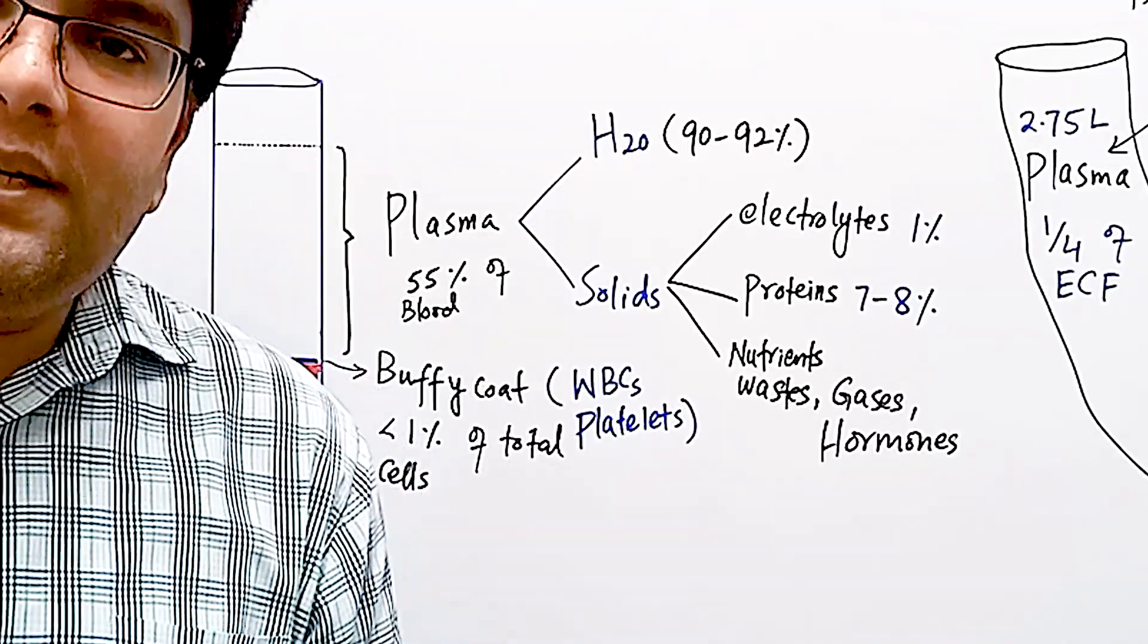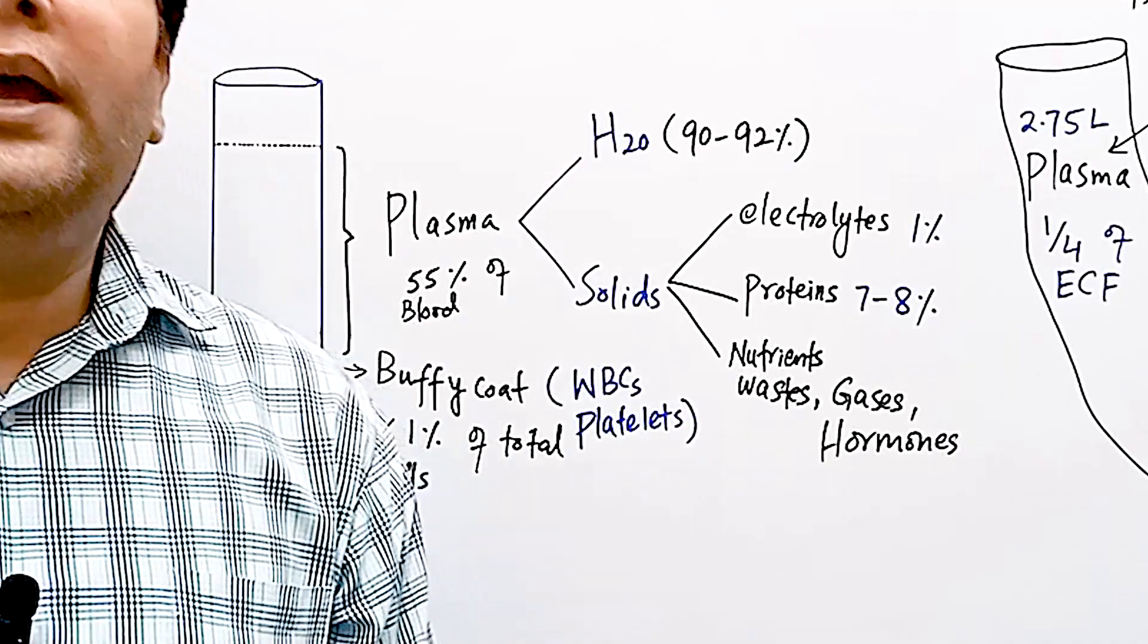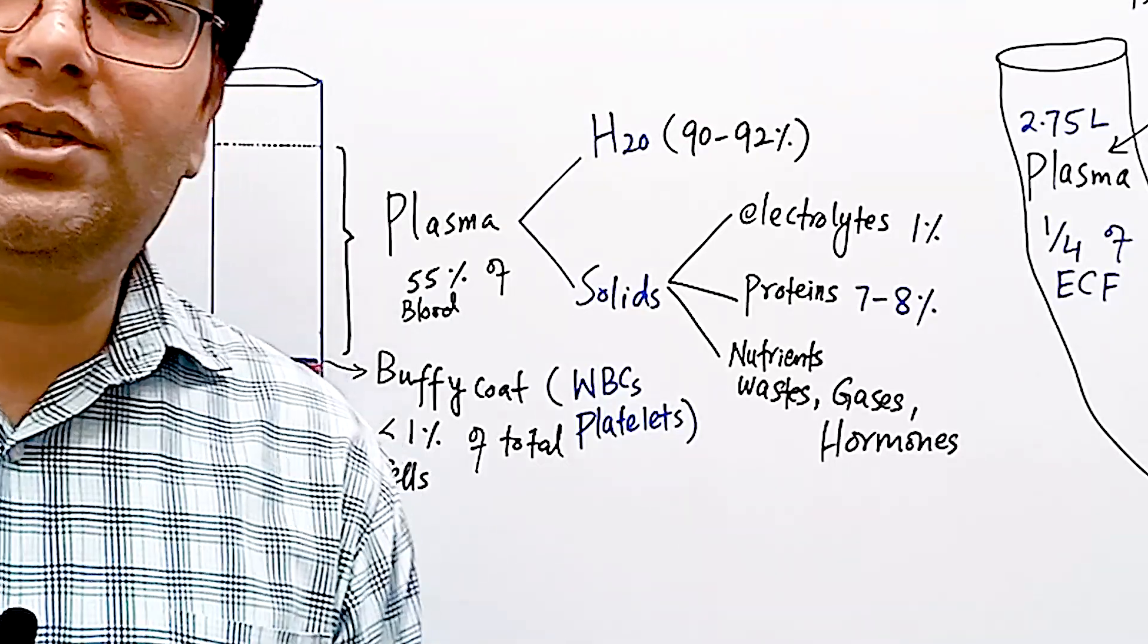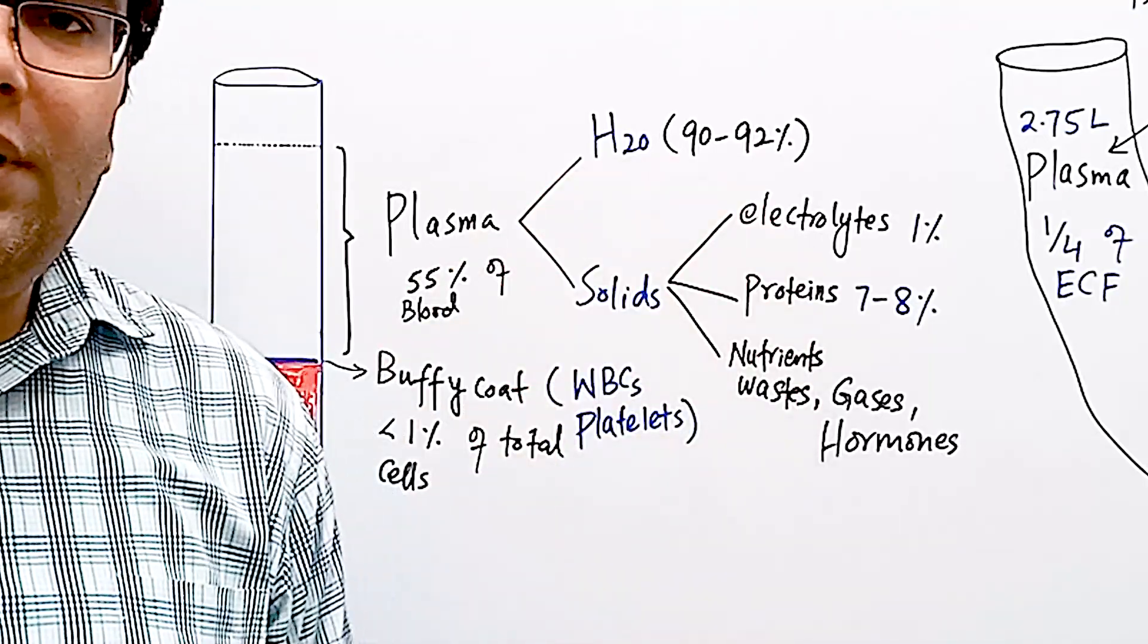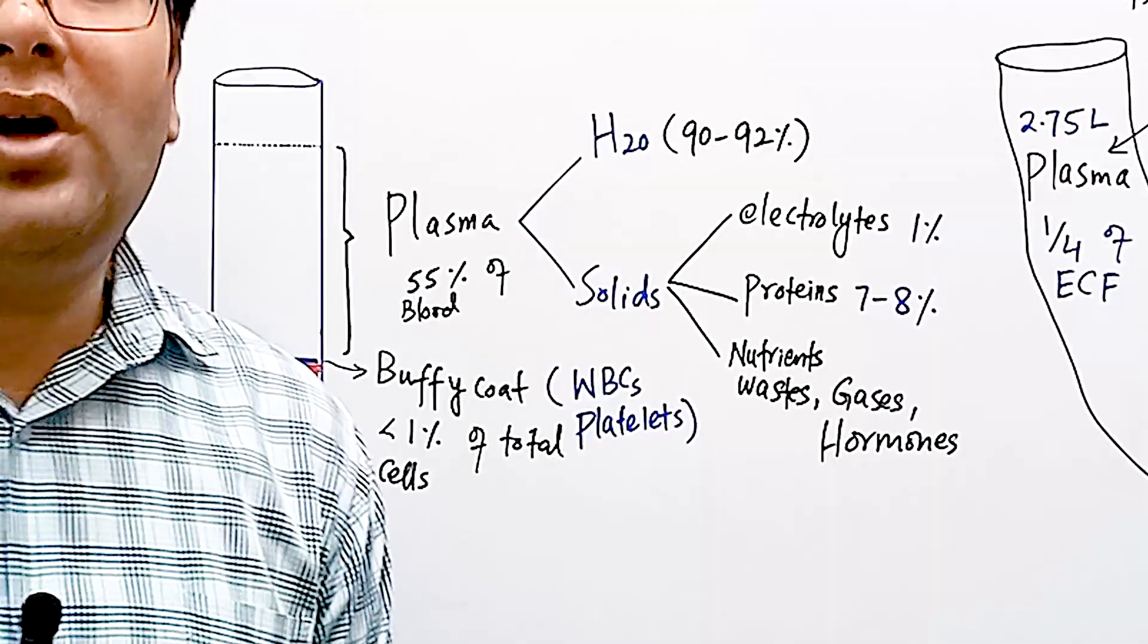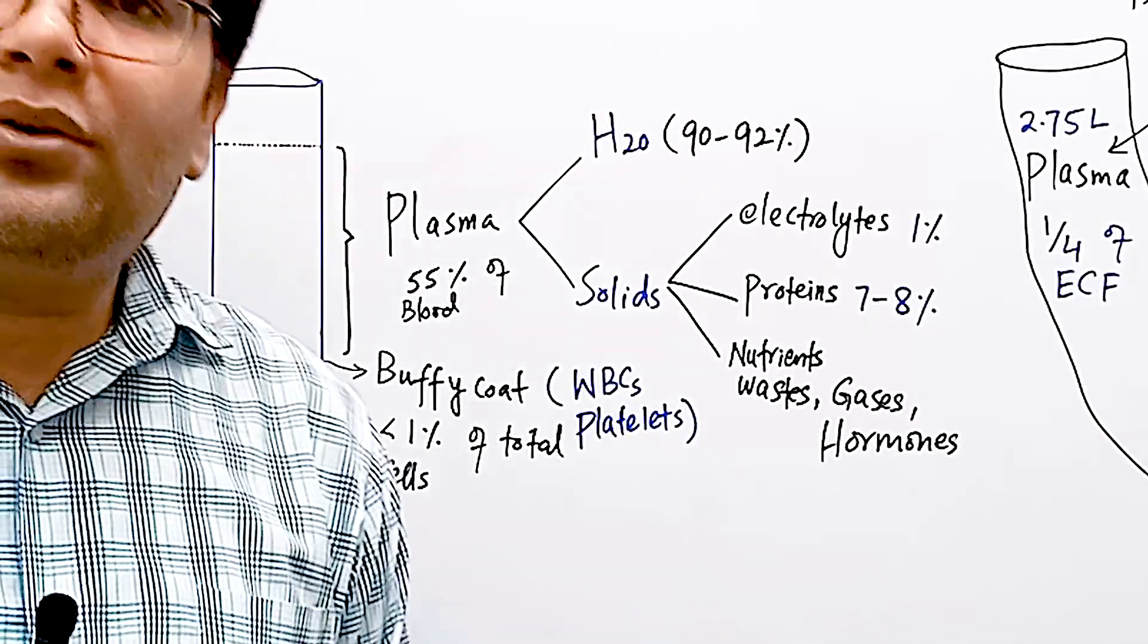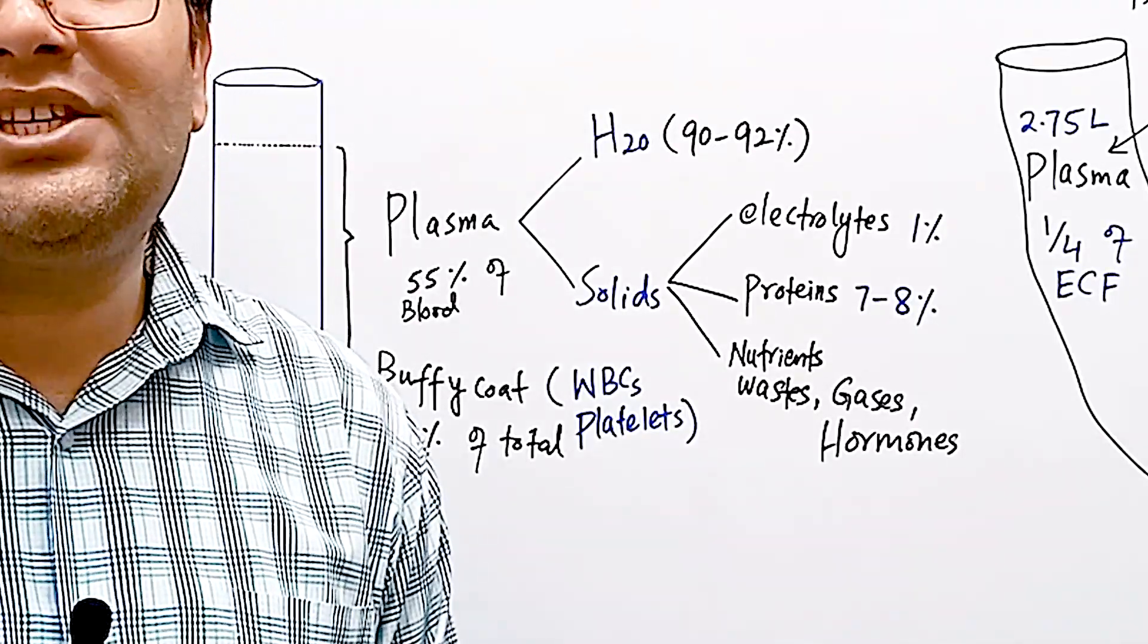Among solids in plasma, electrolytes are about one percent including sodium, potassium, chloride, magnesium, calcium, and bicarbonate. Electrolytes are important for membrane excitability, meaning resting membrane potential and action potential. Because of their osmotic effect, they're important for distribution of fluid between intracellular and extracellular fluid. Bicarbonate ion is very important for buffering pH changes.